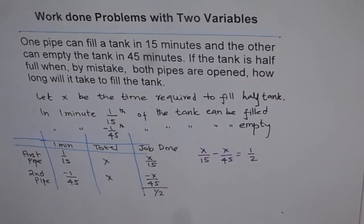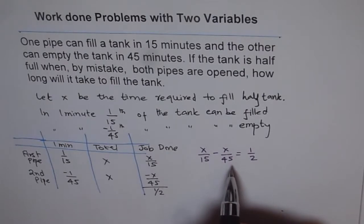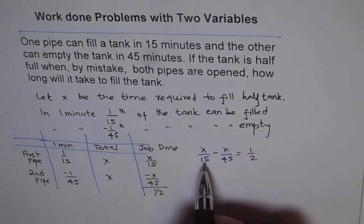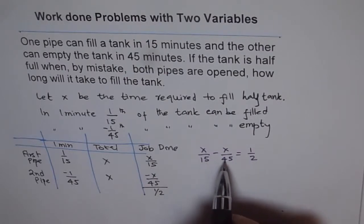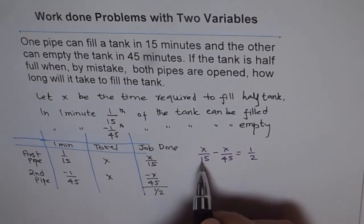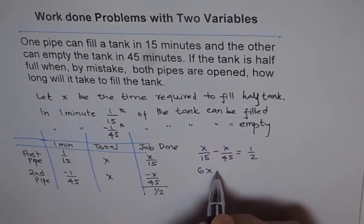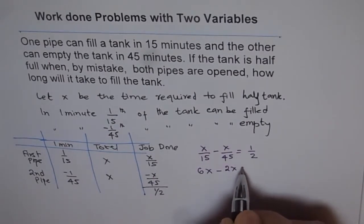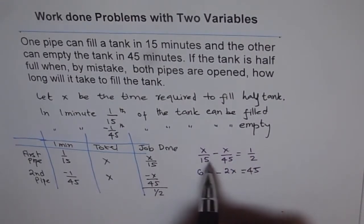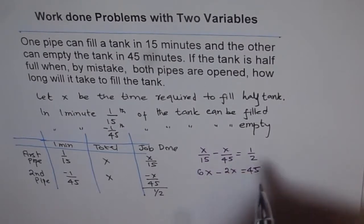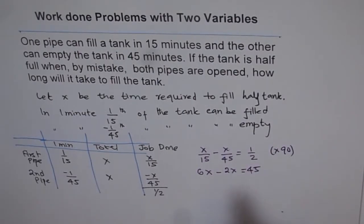The best approach is to get rid of the fractions. Since 45 goes three times into 15 and we have a denominator of 2, let's multiply everything by 90 — 90 is the common denominator. Multiplying through: 90/15 is 6, giving 6x; 90/45 is 2, giving 2x; and 90 times 1/2 is 45. So we get 6x minus 2x equals 45.